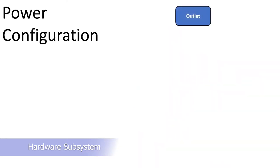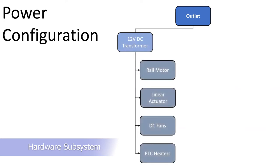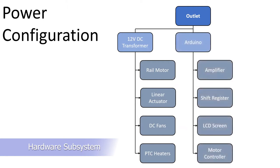All components are powered via an outlet using standard home 120V AC. A 12V DC transformer is used to power higher voltage DC devices. Lower voltage DC devices such as sensors and amplifiers are powered using the Arduino. The heating bands alone are powered directly from the outlet power.